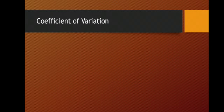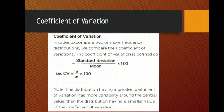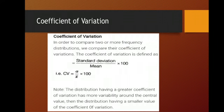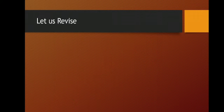If we have two datasets and want to know how much they are varying, we compare two or more frequency distributions using their coefficients of variation. The coefficient of variation is defined as standard deviation upon mean multiplied by 100. This coefficient of variation tells us the variability of the data. The important thing to note is that the distribution having a greater coefficient of variation has more variability around the central value than a distribution having a smaller coefficient of variation.